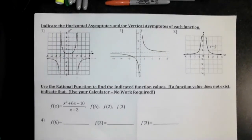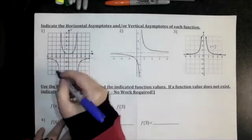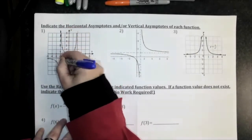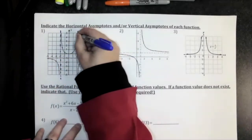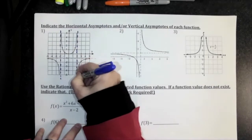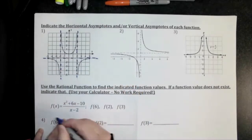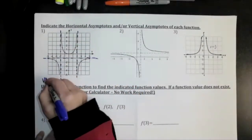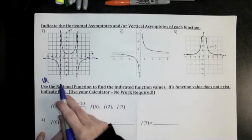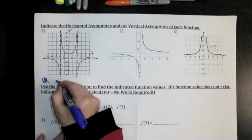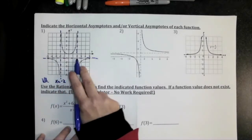Indicate the horizontal and/or vertical asymptotes. You are looking for the dotted lines on the graph. There is a vertical asymptote right there and another vertical asymptote right there — they will be dotted on the paper. The up-and-down ones are the vertical asymptotes, so I'll use VA. Vertical asymptotes are written as equations: x equals whatever number. This one goes through negative two, so x equals negative two; this one goes through two, so x equals two.